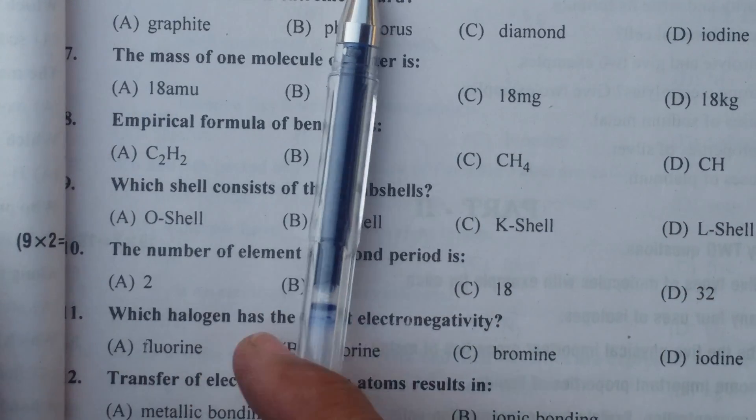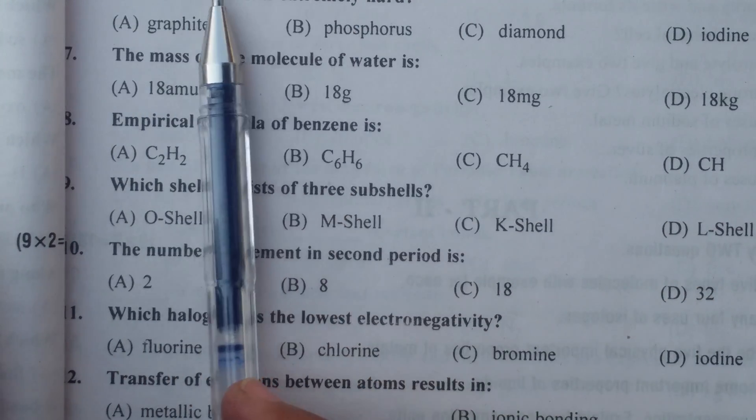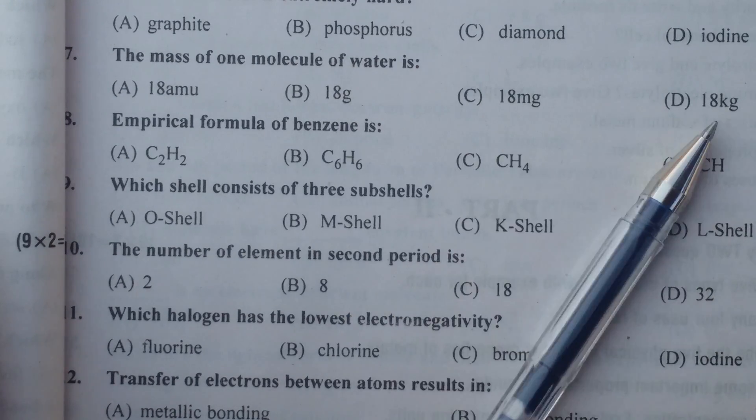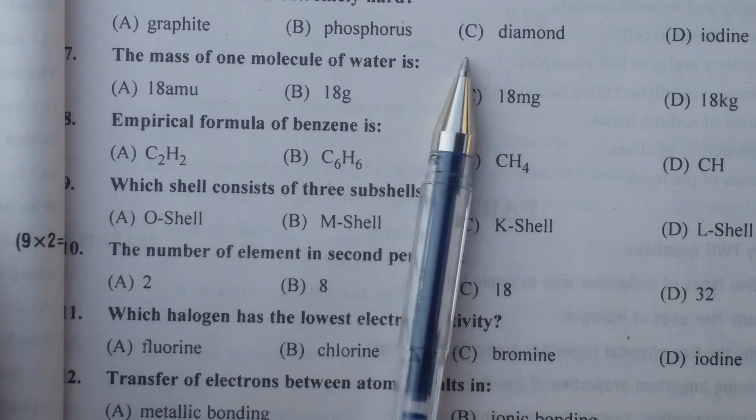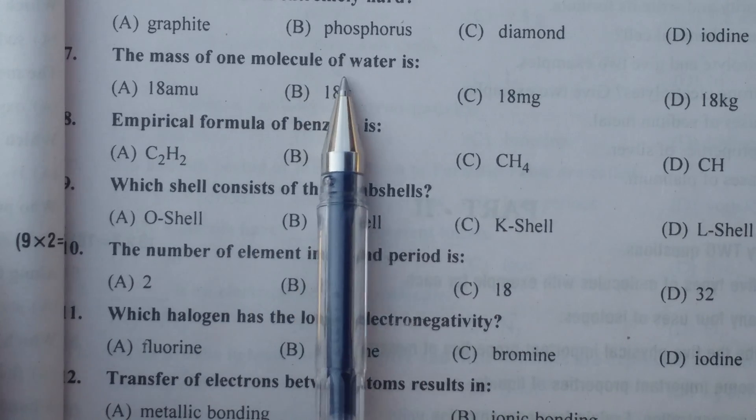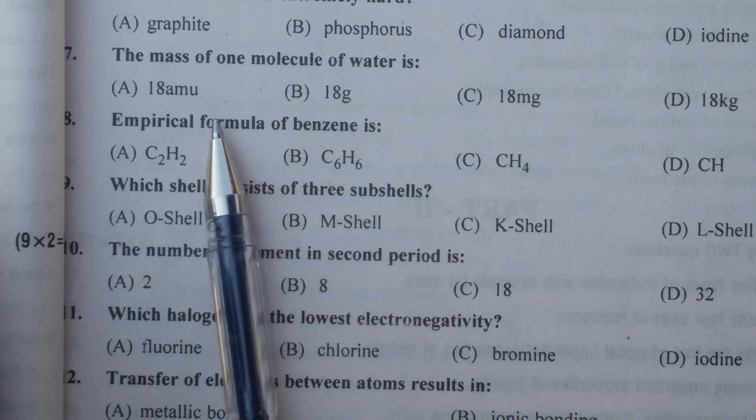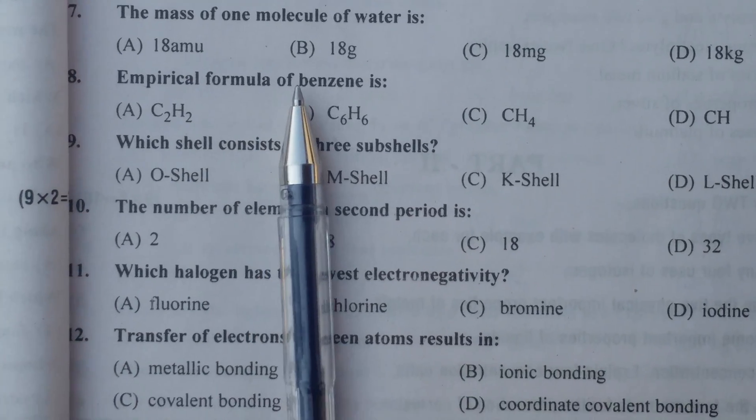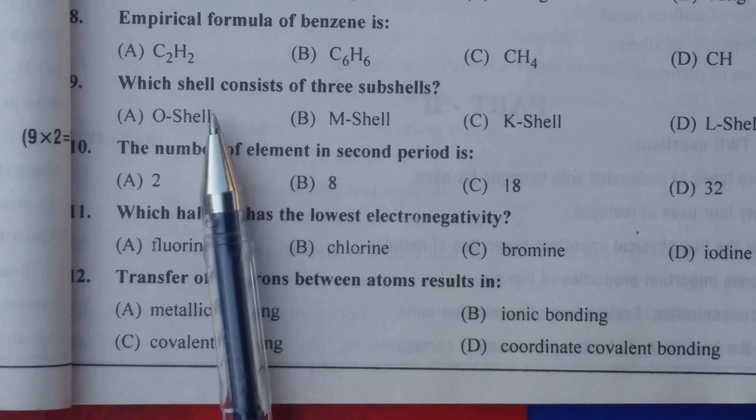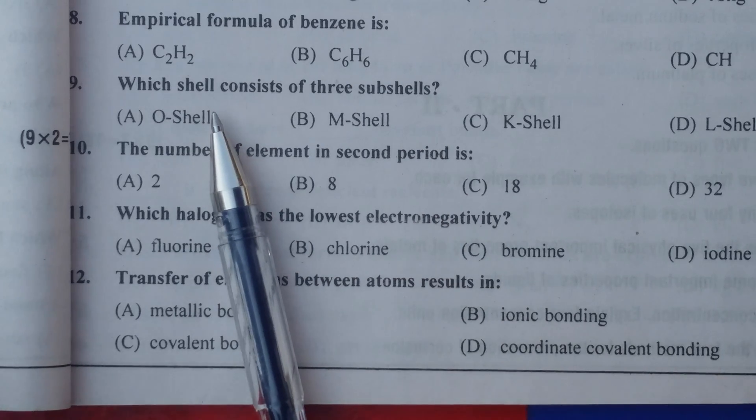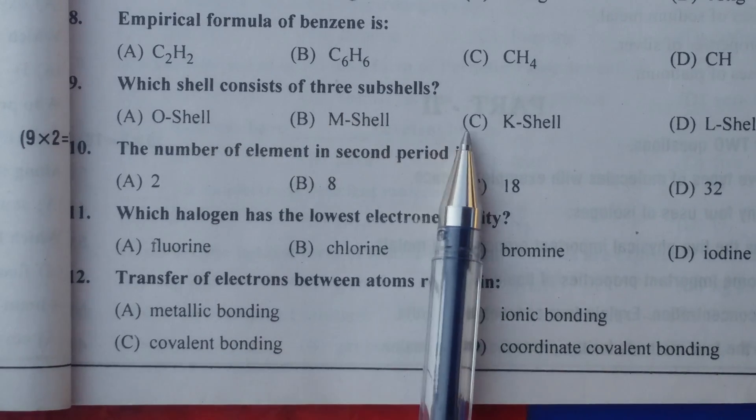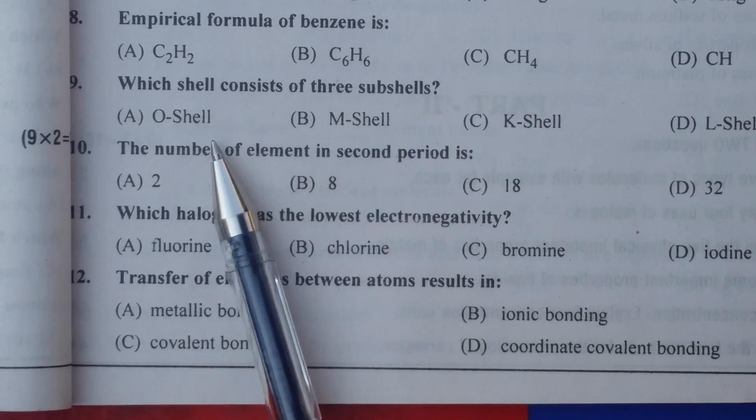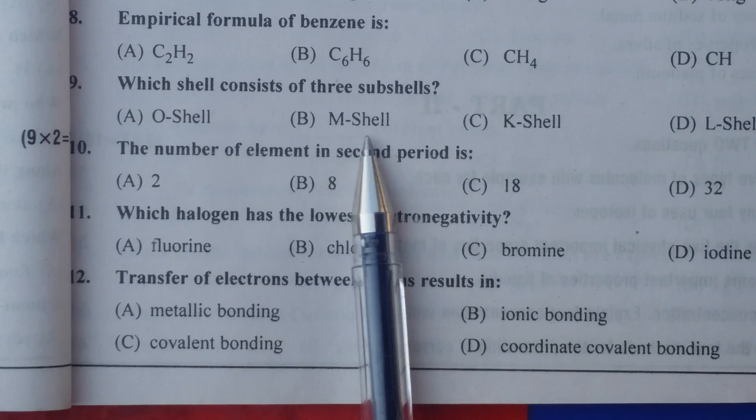Spontaneous chemical reaction takes place in galvanic cell. Which non-metal is extremely hard? Diamond. The mass of one molecule of water is 18 amu. Empirical formula of benzene is CH. Which shell consists of three subshells? M shell.